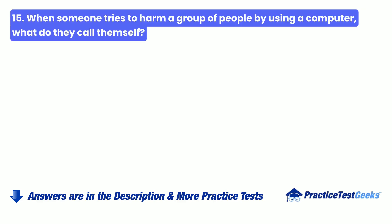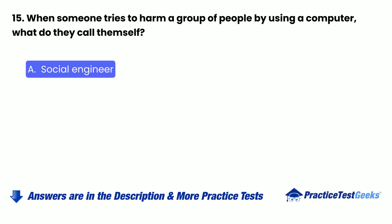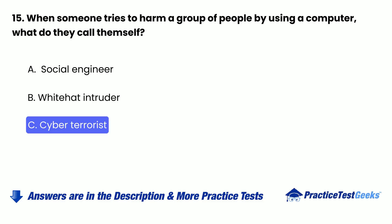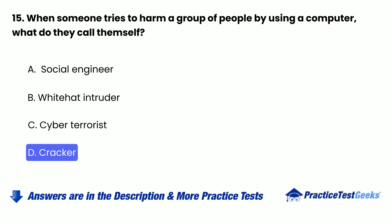Question 15: When someone tries to harm a group of people by using a computer, what do they call themselves? a. Social Engineer. b. White Hat Intruder. c. Cyber Terrorist. d. Cracker.